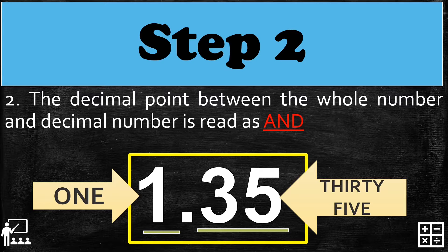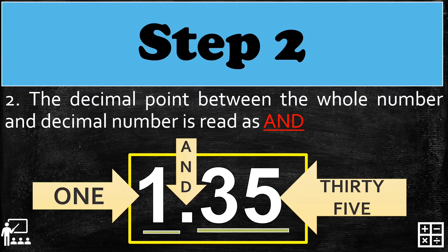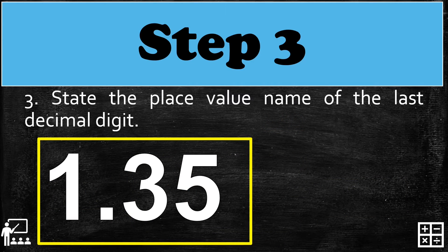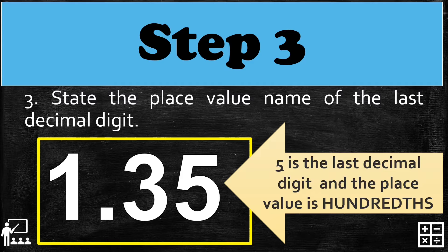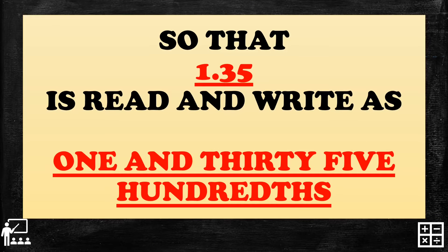We use 'and' if we have a whole number part, but we don't use 'and' if we don't have a whole number part. In my example we have a whole number part, so we use 'and' — giving us 'one and thirty-five.' Step three: state the place value name of the last decimal digit. The last digit is five, and its place value is hundredths.